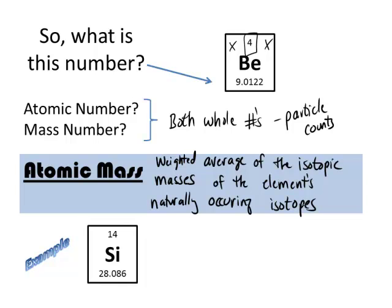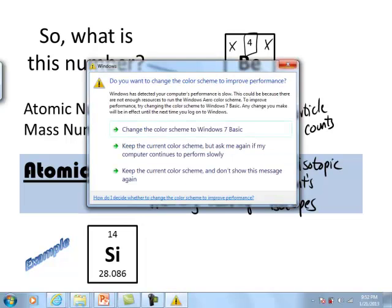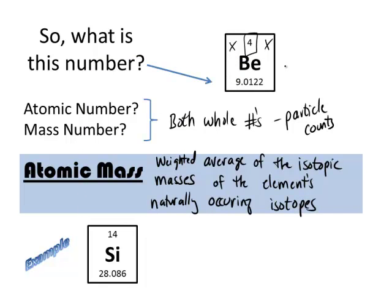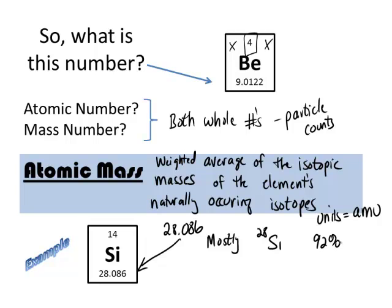So let's do an example. Look at silicon at the bottom here, and the units of atomic mass, by the way, are AMUs, which are simply atomic mass units. So silicon has an atomic mass of 28.086 as shown in the box, and that is because it is mostly the isotope of silicon which is 28 particles. So it's very close to 28 because it is mostly that. And by mostly, it actually is 92 percent that isotope.